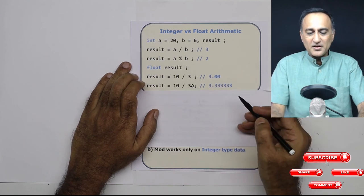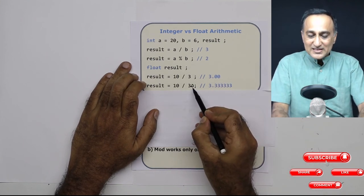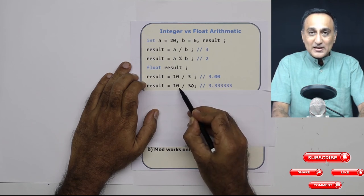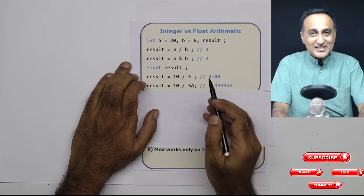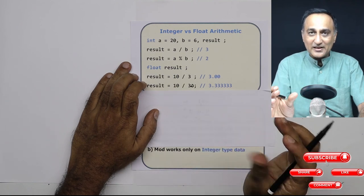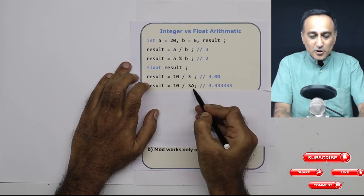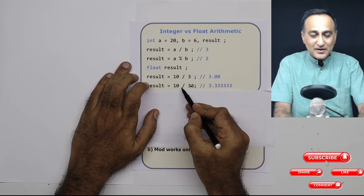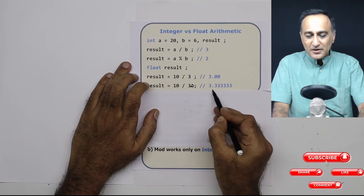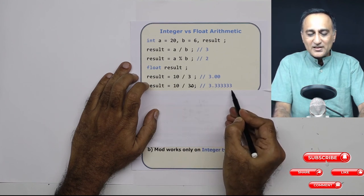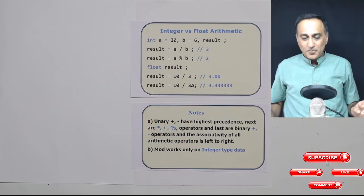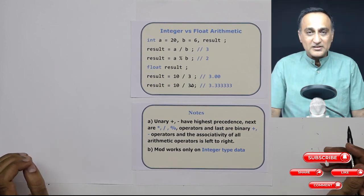So if I divide 10 by 3.0, since one of them is a real number, this automatically also becomes 10.0. There is a reason for that. This is an integer which is of a smaller data type. This is float, which is a bigger data type. So a smaller data type cannot be divided by a bigger data type. So it upgrades both of them. This 10 becomes 10.0. This I have already made it 3.0. Now if I print, the result is going to be 3.3333.